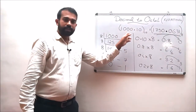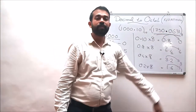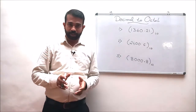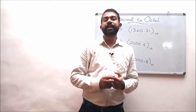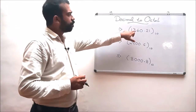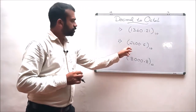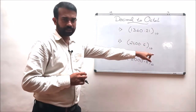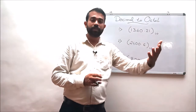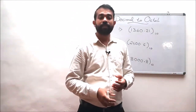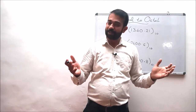The octal equivalent of the decimal number 1000.10 to the base 10 is 1750.0631 to the base 8. In this topic we discussed how to convert a fractional decimal number into its octal equivalent. For the assignment, convert: (1) 1360.21, (2) 2400.6, and (3) 8800.8 into their octal equivalents. In the upcoming lecture we will discuss how to convert an octal number into its decimal equivalence. Thank you and all the best!